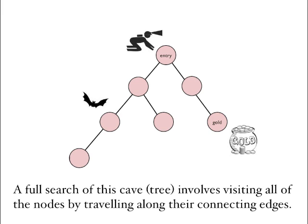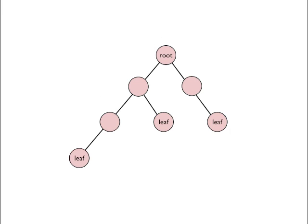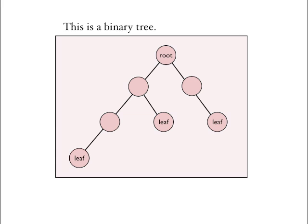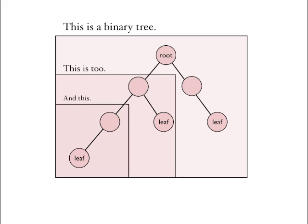If we're going to search through this cave system exhaustively so that we visit each node, we must move from one node to the next along the paths that connect them. The root is at the top, and the leaf nodes are the nodes at the bottom that have no further subtrees branching from them. This is a binary tree because each node has at most two paths leading from it. Any sub-part of the tree is also a binary tree — even a single leaf node at the bottom is a binary tree, though a degenerate one with no children.